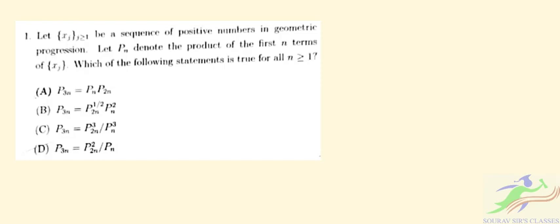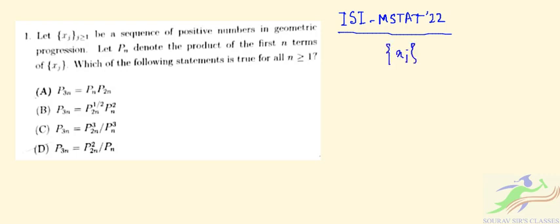Hello students, welcome to Short of Sir Classes. This question is from ISI M.Stat 2022. We will be solving question number one. This solution has been prepared by the faculty of ISI Short of Sir Classes. Question number one: let X_j, j greater than or equal to 1, be a sequence of positive numbers in geometric progression. Let P_n denote the product of the first n terms of X_j.